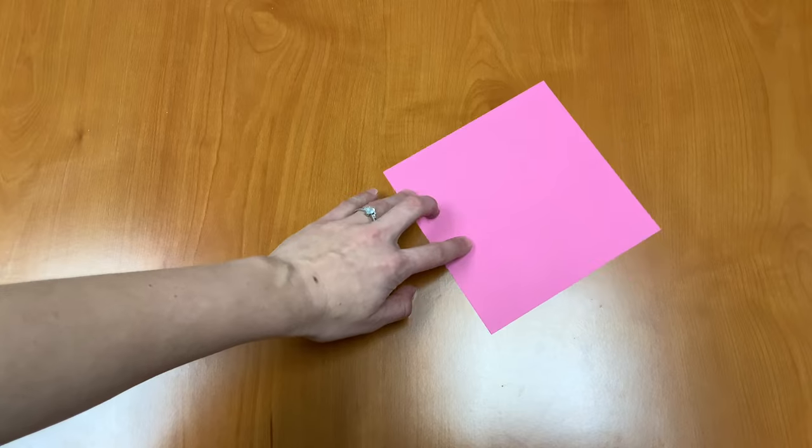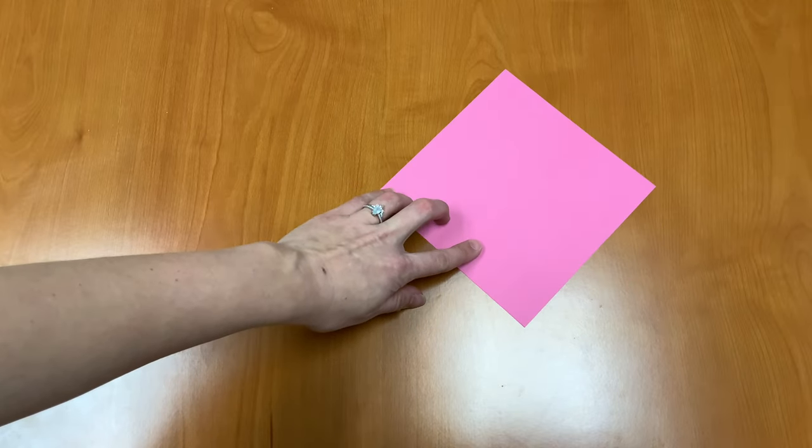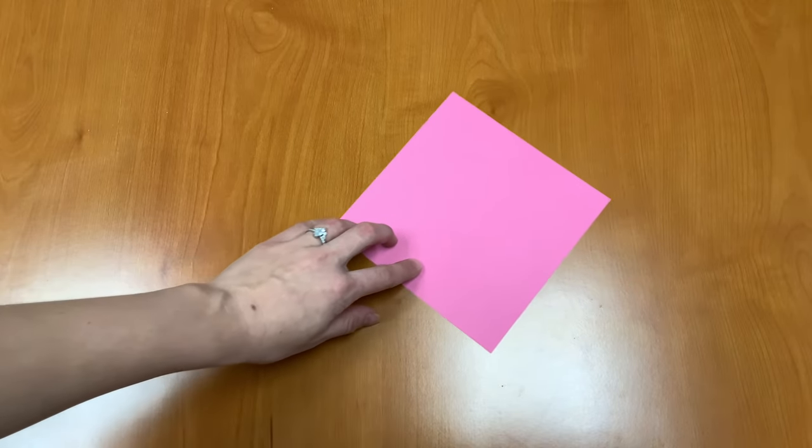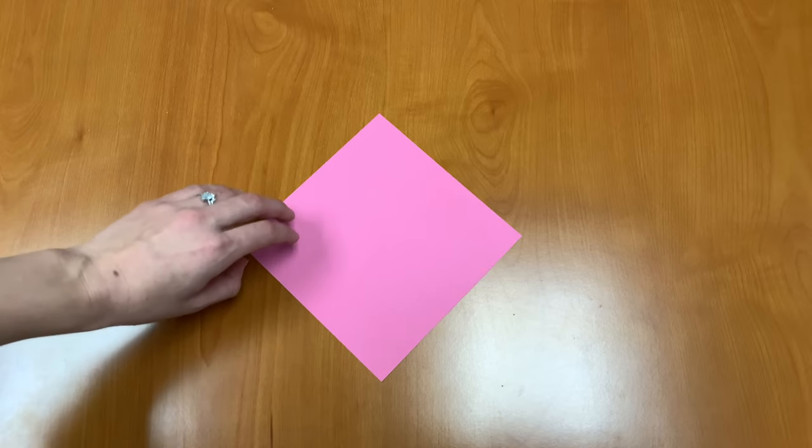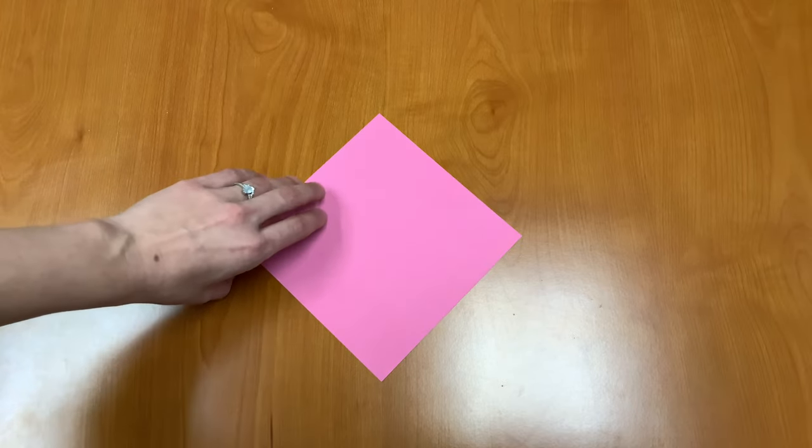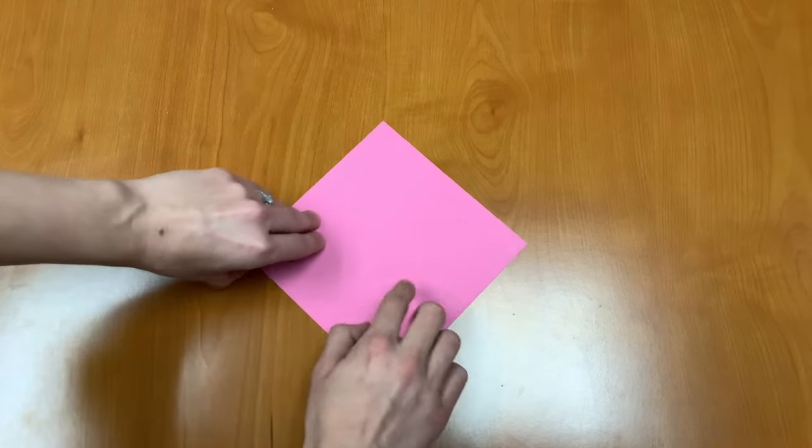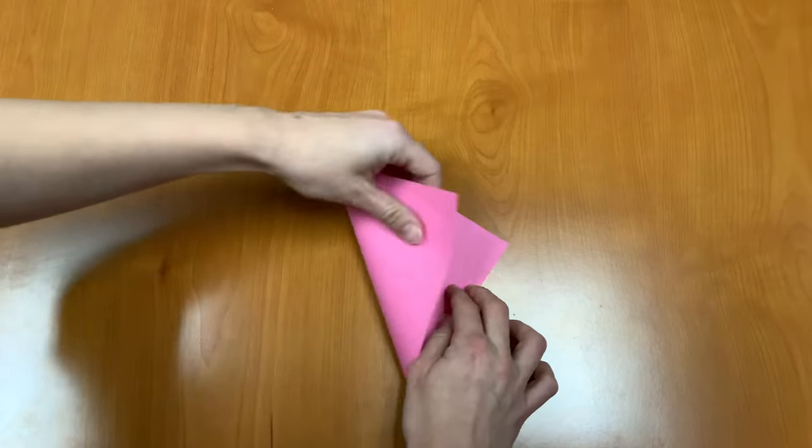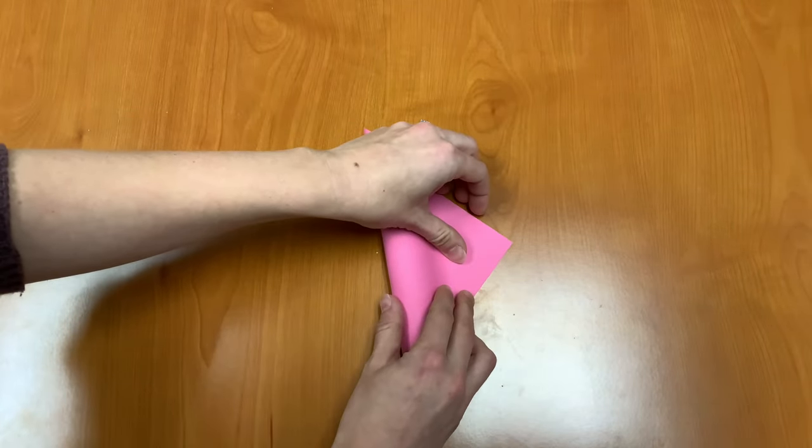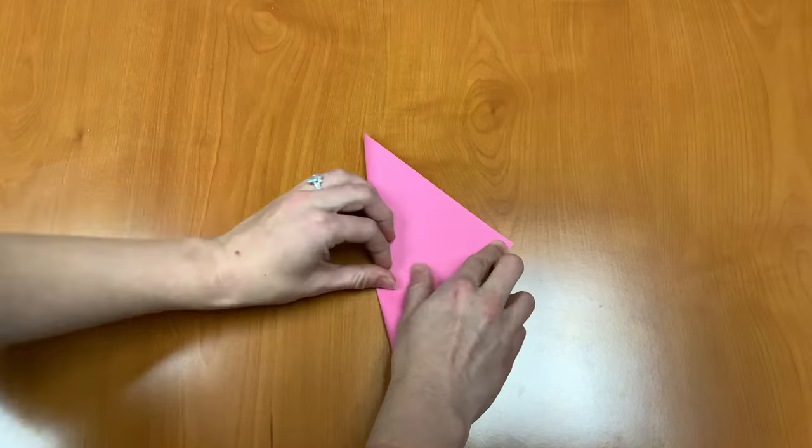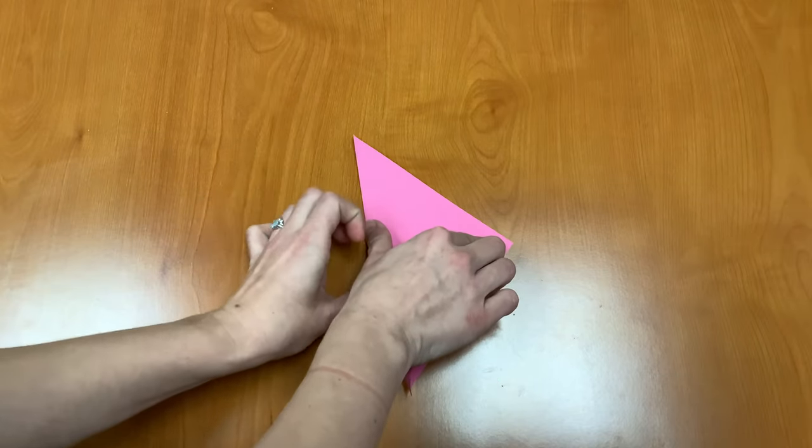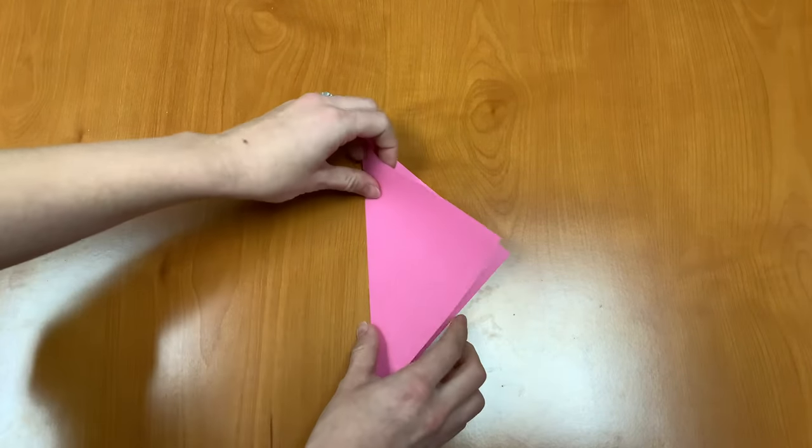Our first step is to place your paper so it's a diamond shape with the lower corner pointing towards you. Next we're going to fold the paper in half vertically from the left corner to the right. Then unfold.